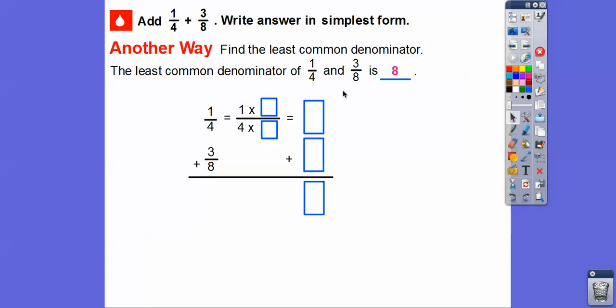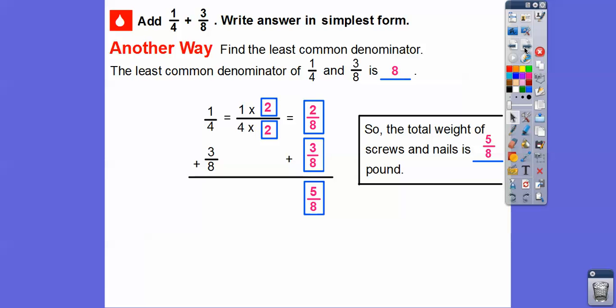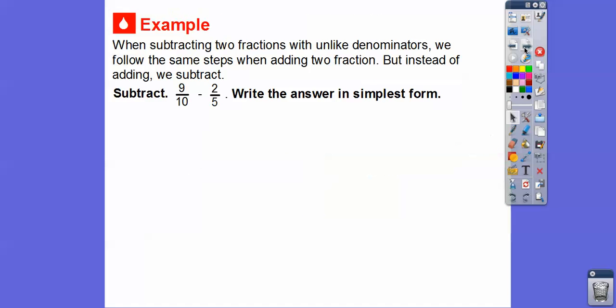This is already in terms of eight. To make this four an eight, we've got to multiply it by two. That means we're going to multiply the top by two. So we have one times two over four times two, which gives us two-eighths. Then let's just slide over that three-eighths. When we add these common denominators, they're already in terms of eight. So we just add two plus three, which gets us five-eighths. That's what we got the other way, we just don't have to reduce it at the end. So the total weight of the screws and nails is still five-eighths of a pound.